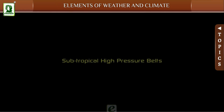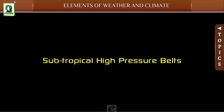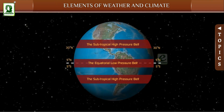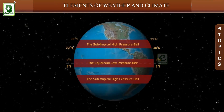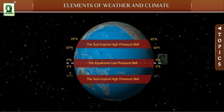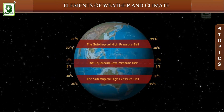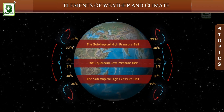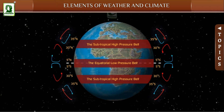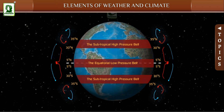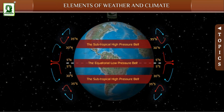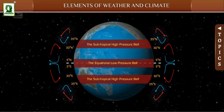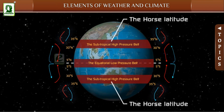The subtropical high pressure belts extend from 30 to 35 degrees latitudes both north and south of the equator. The air that rises in the equatorial region gets cool when it goes up and sinks down in this belt, creating a high pressure zone. It is also called the horse latitudes.